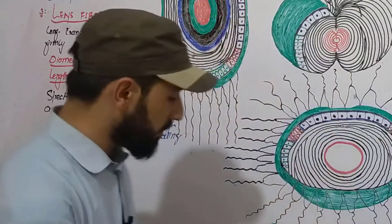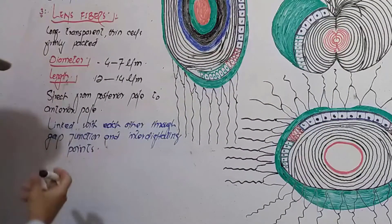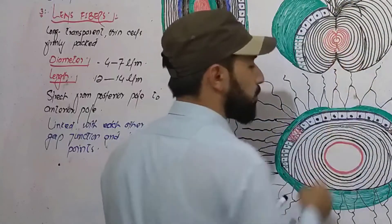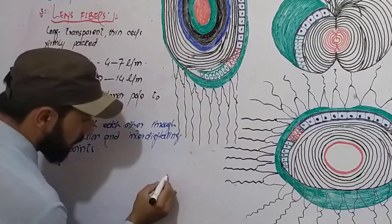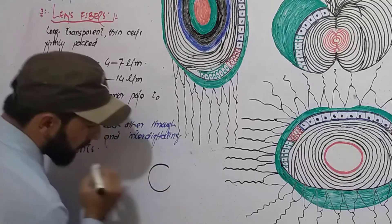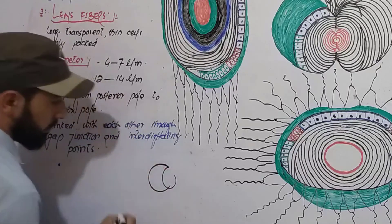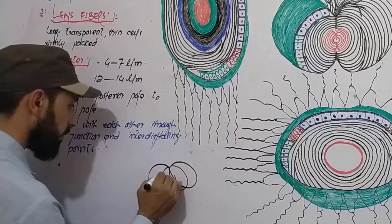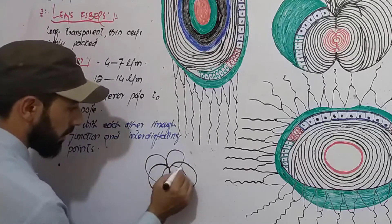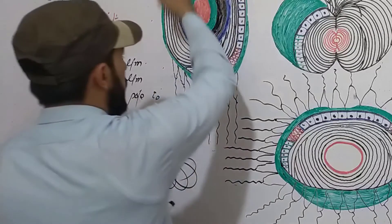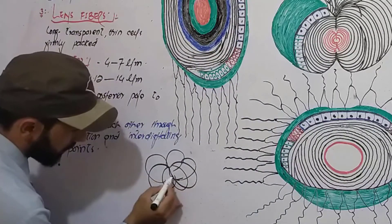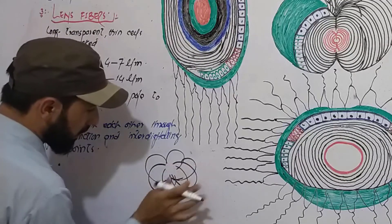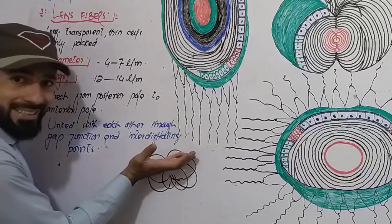The next important point about lens fibers is that all these fibers will unite with each other at a central point. Look carefully — this fiber comes and unites here, this fiber unites here, and so on. They unite on the anterior surface and on the posterior surface of the lens.